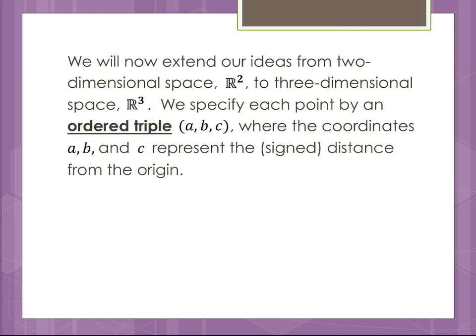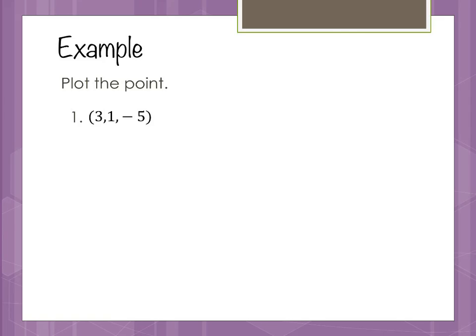A point in three-dimensional space can be recognized as an ordered triple, so it has three coordinates: X, Y, and Z, where the coordinates represent the signed distance from the origin. We're going to use the conventions that the textbook uses, which are standard in the sense that some textbooks use them — they're slightly different than others, so you may see variations.